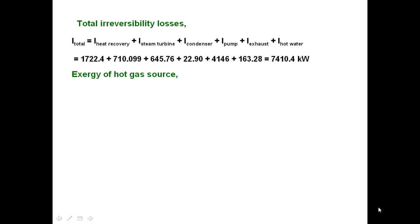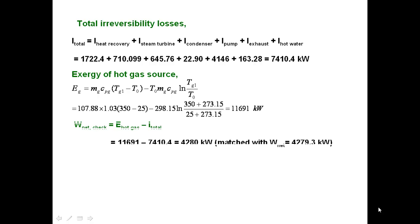To find the second law efficiency, exergy of hot gas is required. From the formula, exergy of hot gas obtained is 11.691 megawatts. Similar to the first law efficiency, that is energy balance, the exergy balance gives the work output from the steam power plant. W net is equal to exergy of the hot gas minus total irreversibility. That is equal to 4.28 megawatts.